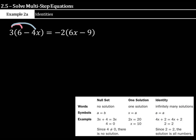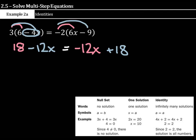We'll have our 3 times 6 and our 3 times negative 4x. So our 3 times 6 is 18. And then we have 3 times, pay attention to that negative 4. Negative 4x is a negative 12x. And that's going to equal negative 2 times 6 is a negative 12x. And negative 2 times negative 9 is a positive 18. One of the first things we want to do when we have a variable on the left side of the equation and a variable on the right side of the equation is to move one of the variables over.